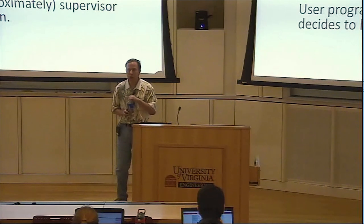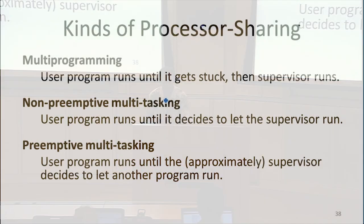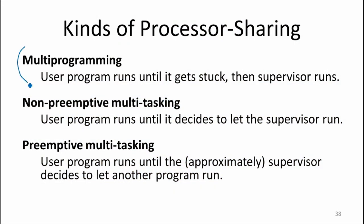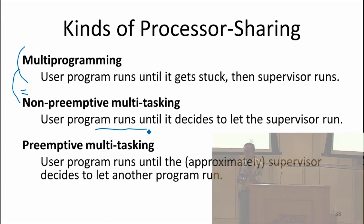There are three different ways we might think about sharing a processor. Multiprogramming is the first: if a program gets stuck waiting for data, a supervisor program takes over and picks some other program. That really means the same thing as non-preemptive multitasking — it's basically up to the program to say when its turn is done. With multiprogramming, you signal you're done by requesting some data; with non-preemptive multitasking there may be other ways, but it's up to the programmer to decide.